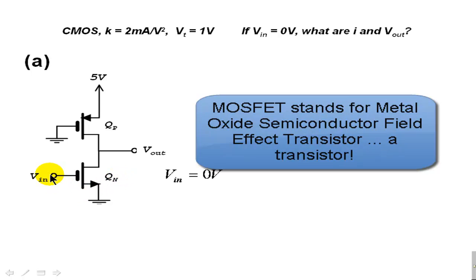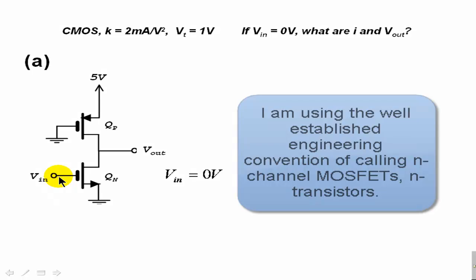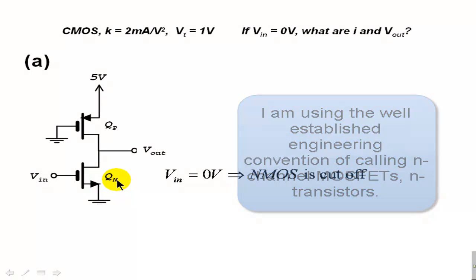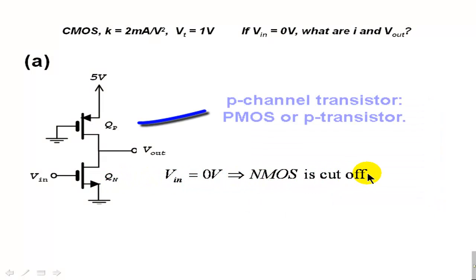We realize that if this input voltage is 0, that voltage is also the gate-source voltage of the N transistor. If that is 0, that transistor is in cut-off mode.